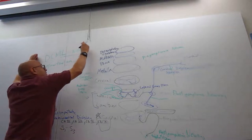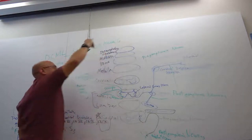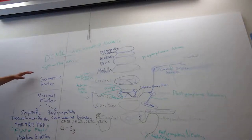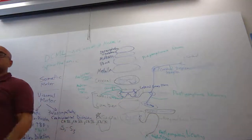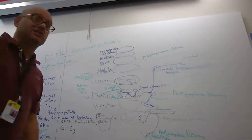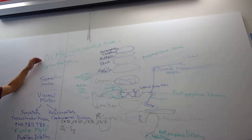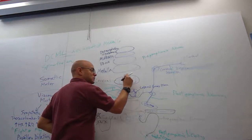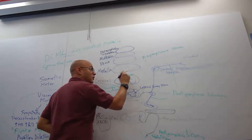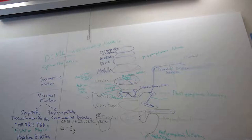The DCML decussates at the medulla — they crisscross from one side to the other at the medulla. Eighty percent of the spinothalamic tract crisscrosses at the level of the spinal cord. Twenty percent goes up and crisscrosses at the level of the medulla. That's the difference between the lateral spinothalamic versus the anterior spinothalamic tracts — an 80-20 breakdown. The dorsal column is also known as the posterior white column, because it's white matter.